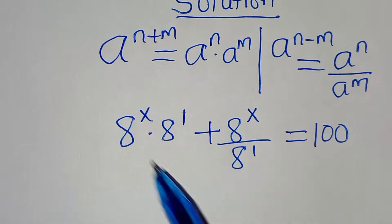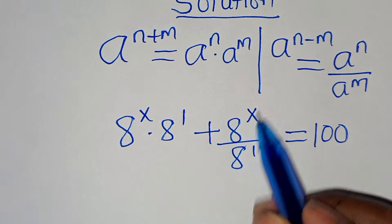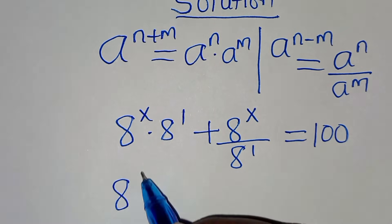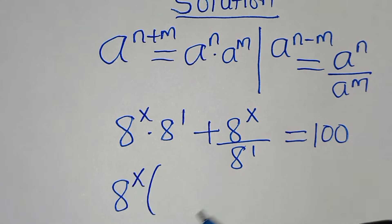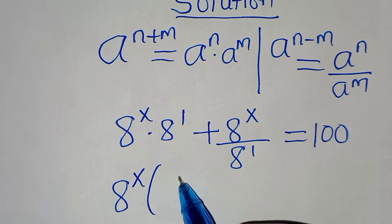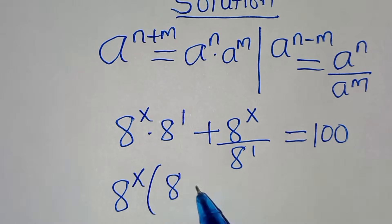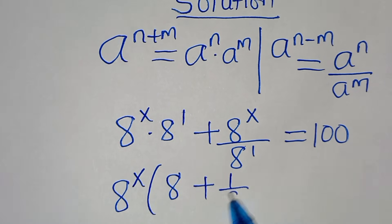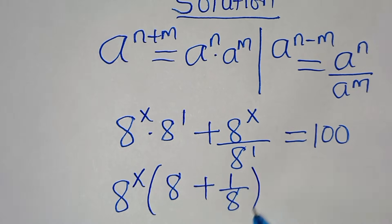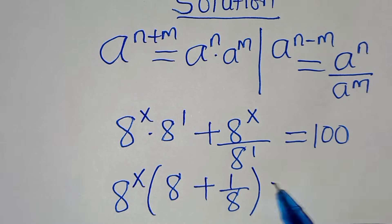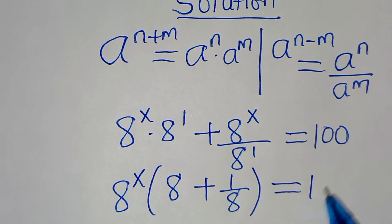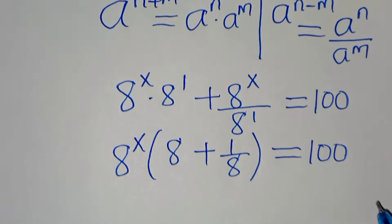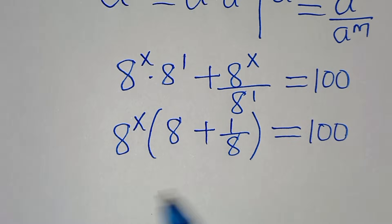Now 8^x is common, so we can factor it out: 8^x times (8 + 1/8) equals 100.